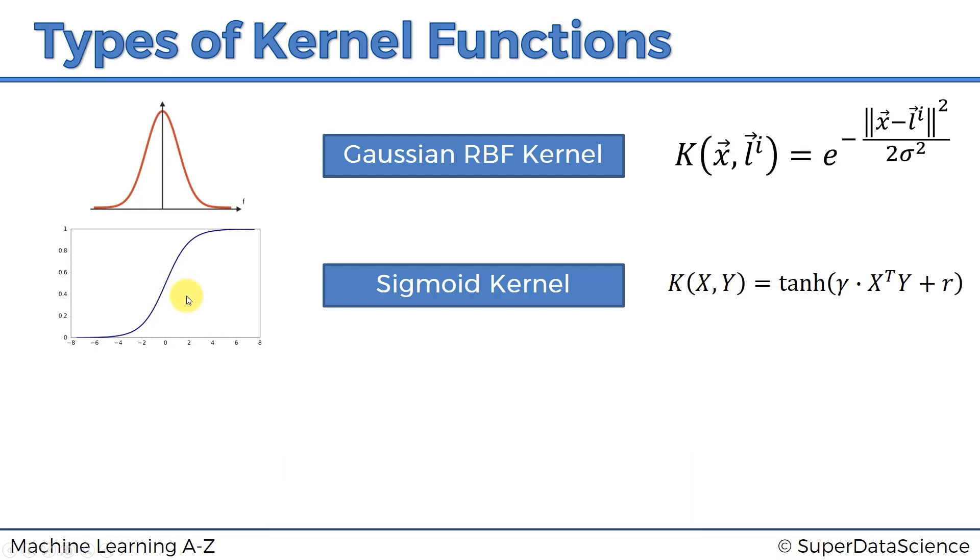Looking at this two-dimensional space projection, you can see that anything to the right will automatically have a high value and be included in your classification, while anything to the left will be excluded.